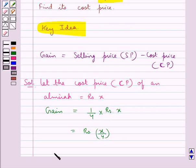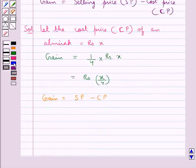Now, since from the key idea we have that gain is equal to SP minus CP, that is the selling price minus the cost price, from here we get selling price is equal to gain plus cost price.